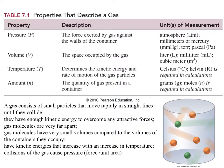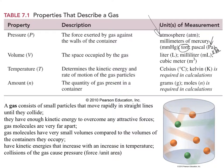The units of measurement for pressure: the most common is the ATM, or atmosphere, but we also look at and sometimes use millimeters mercury, torr (abbreviated torr, t-o-r), or pascal, or sometimes even kilopascal, which is kPa.